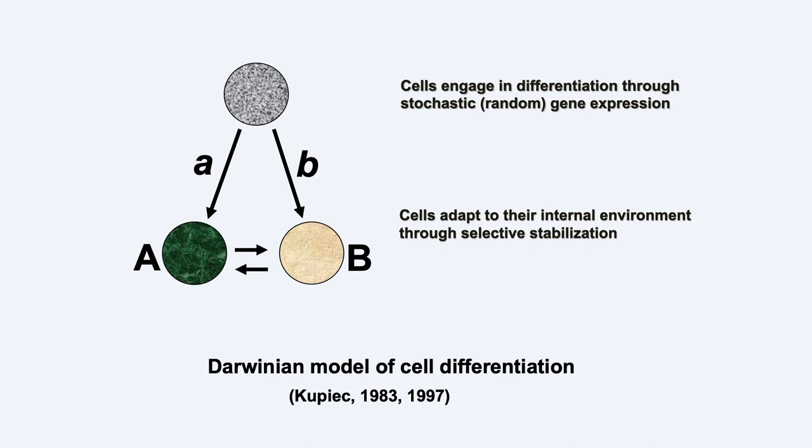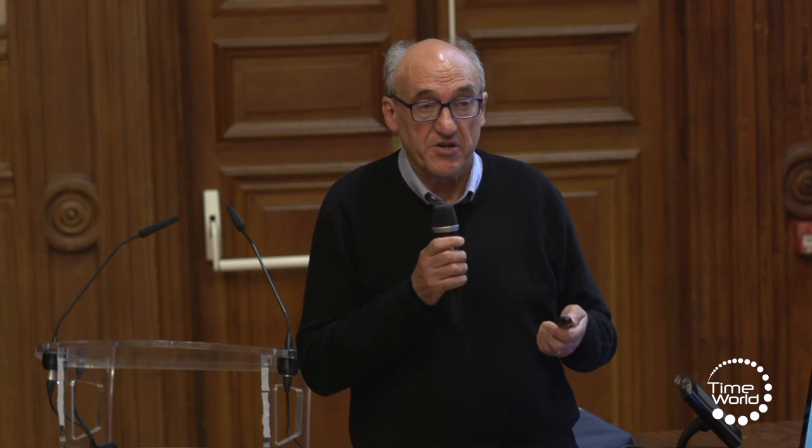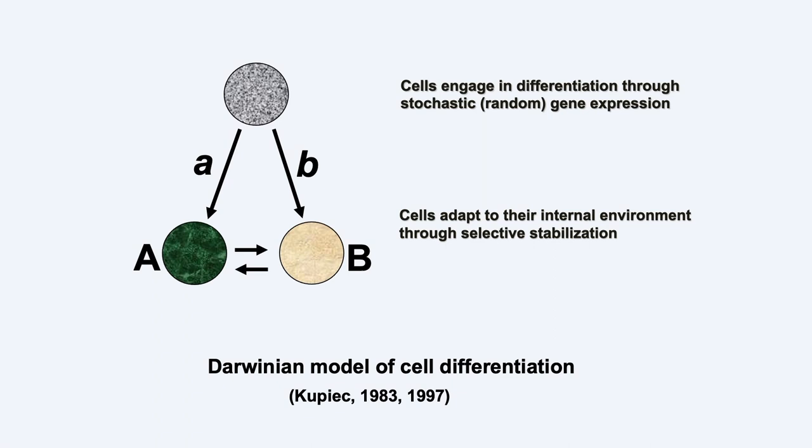Classically, cells are believed to follow the instructions of a deterministic genetic program. I have proposed a different model according to which cells first engage in cell differentiation through stochastic gene expression, then stabilize through selective interactions. This model is called the Darwinian model of cell differentiation because of its analogy to natural selection.